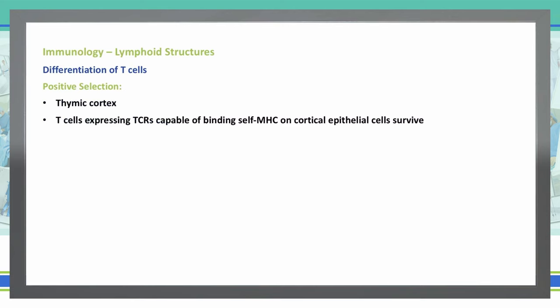Positive selection is selecting those T cells to continue to survive. Negative selection occurs in the thymic medulla — so the cortex is positive selection and the medulla is negative selection.